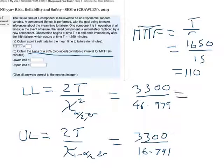So this one's going to be equal to 3300 divided by 46.979, that's going to be 70.24. And this one is going to be equal to 3300 divided by 16.791, and that's equal to 196.53. And that's our answer.